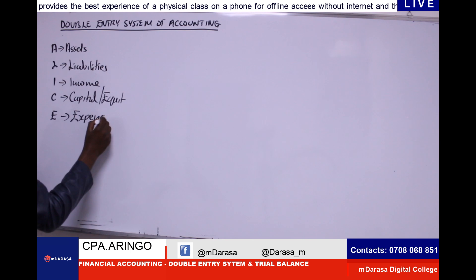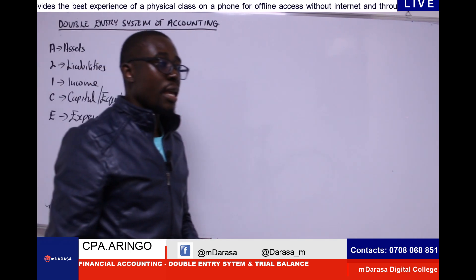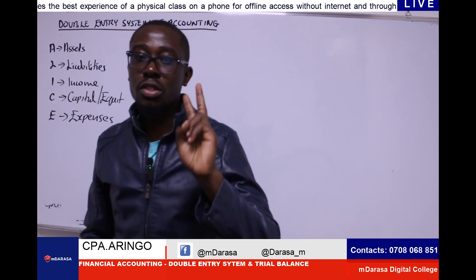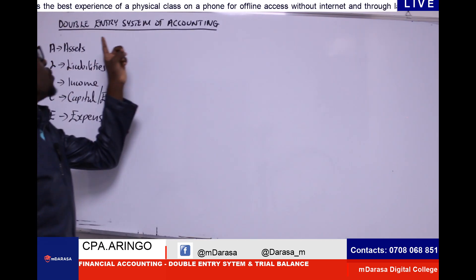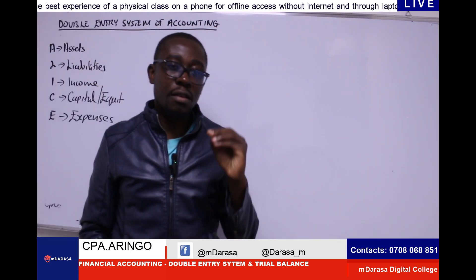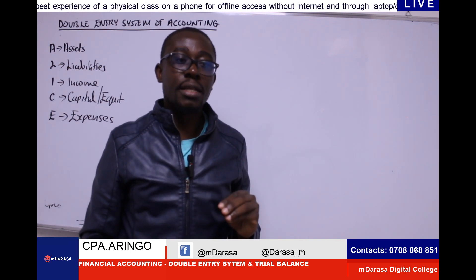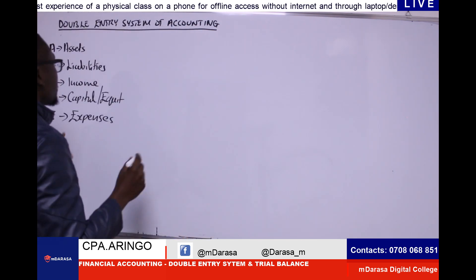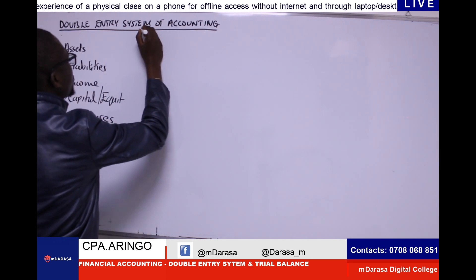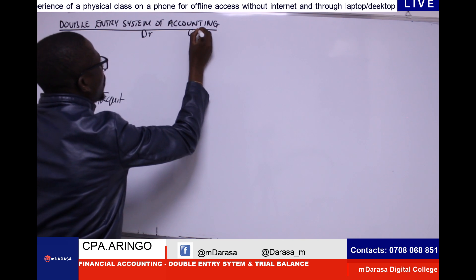So understanding this — for every entry in accounting, we'll always be having a full entry. That's why we term it as the double entry system of accounting. I'll always be having a debit side and I'll always be having a credit side. So let us do this summary — it will help us a lot. We talk about our debit side and talk about our credit side.